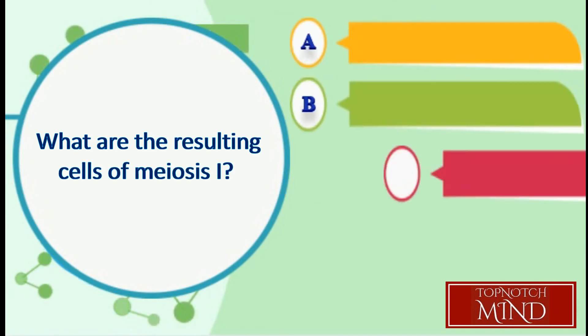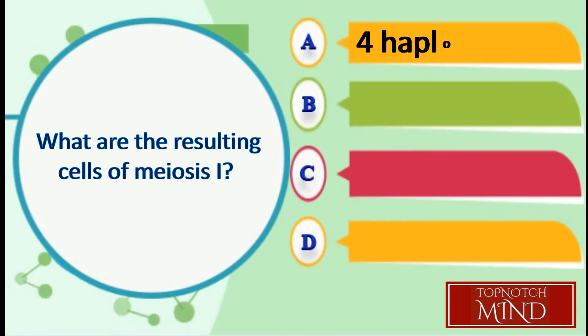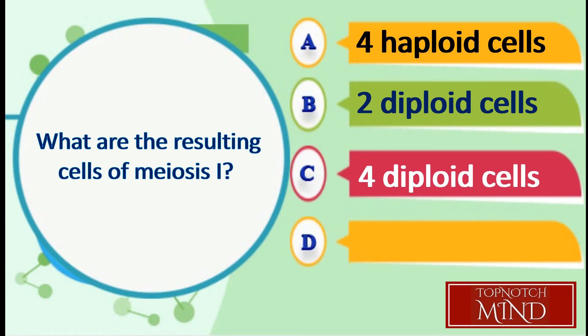What are the resulting cells of meiosis 1? A. 4 haploid cells, B. 2 diploid cells, C. 4 diploid cells, D. 2 haploid cells.